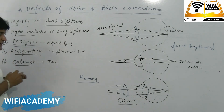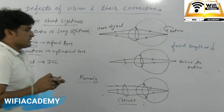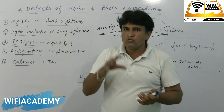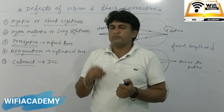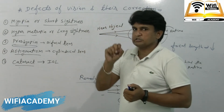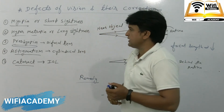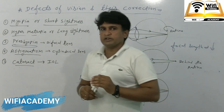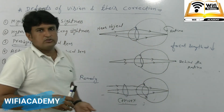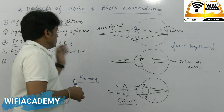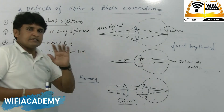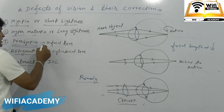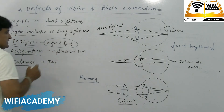Then there is presbyopia. In presbyopia, what happens is that with age, the eye lens and ciliary muscles lose their flexibility. Both nearby and distant objects are not clearly visible.